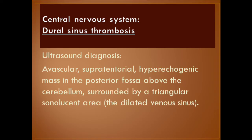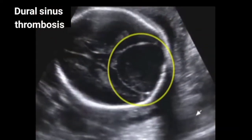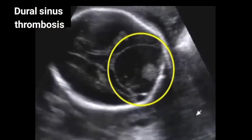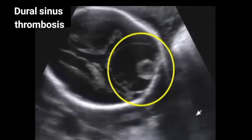Dural sinus thrombosis — ultrasound diagnosis: an avascular, supratentorial, hyperechoic mass in the posterior fossa above the cerebellum, surrounded by a triangular sonolucent area representing the dilated venous sinus.